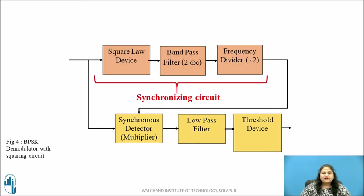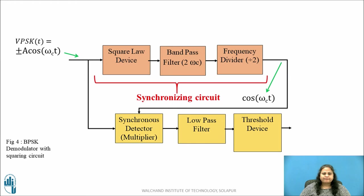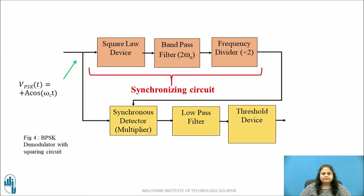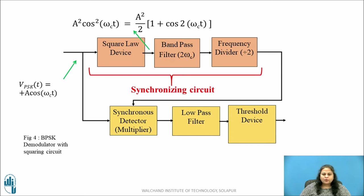The synchronous carrier signal in coherent BPSK is extracted from the received signal using a synchronizing circuit. The synchronizing circuit consists of a squaring device, a band pass filter, and a frequency divider. The received BPSK signal is applied to the squaring device. Its output is A² cos²(ωc·t) = (A²/2)[1 + cos(2ωc·t)]. This signal is passed through a band pass filter tuned to 2ωc, giving cos(2ωc·t), which after frequency division gives the required synchronous carrier cos(ωc·t).